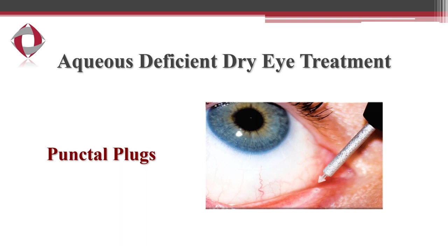We also have the treatment option of punctal plugs. This is where we insert a tear duct plug into your tear duct, which is where your tears drain out of the eye. This basically slows the drain — you have two tear ducts per eye, one on the upper lid and one on the lower lid. About 70% of your tears drain out of your lower tear duct. By stopping up this tear drain, we essentially keep tears contacting the ocular surface longer. These are easy to insert in-office and can be removed at any time.